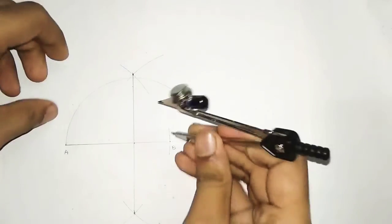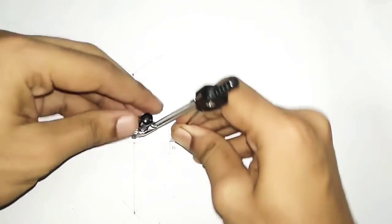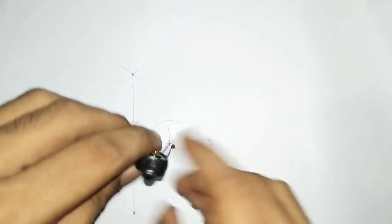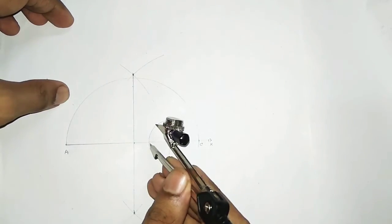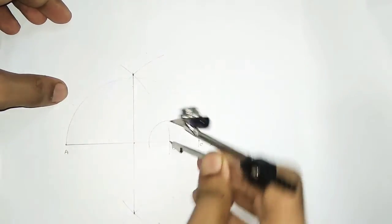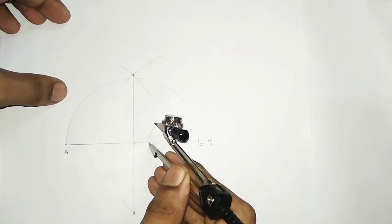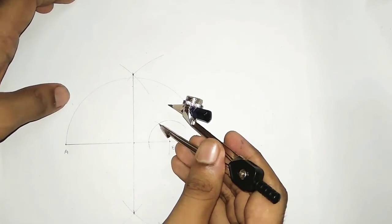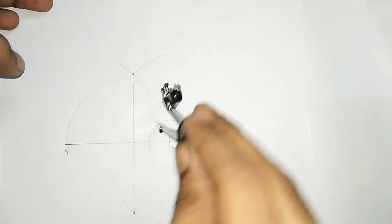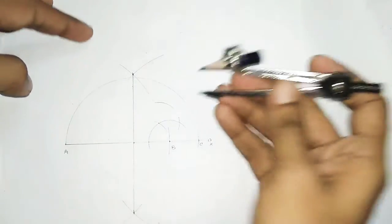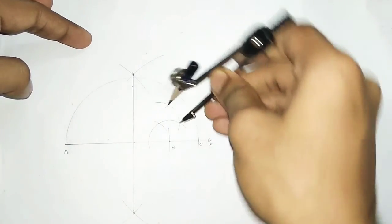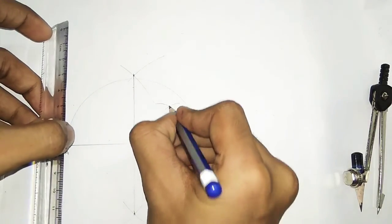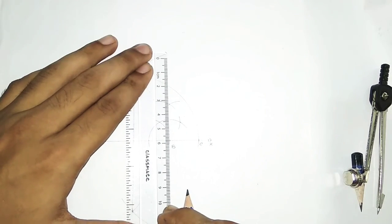At point B you have to draw a 90-degree angle — that means a perpendicular to the line AC. You can draw it in any direction; I am drawing in the upper direction. To draw a 90-degree angle, take any arc measurement and, without changing the compass, place the compass successively to draw arcs. Join the two resulting points to get the perpendicular at B.